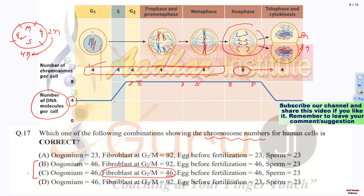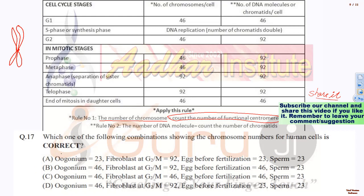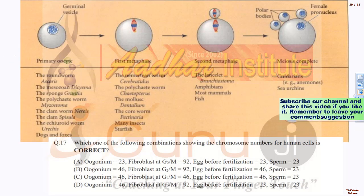This gives us 46 for the fibroblast at G2/M, automatically supporting choice C. Now for the egg before fertilization, I referred to Gilbert's developmental biology, chapter 7, which clearly states that at the time of sperm entry, the egg can be in different stages — primary oocyte, metaphase I, metaphase II, or meiosis completed — depending on the organism.